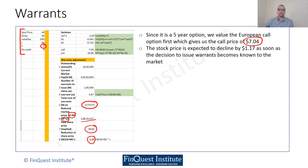That is the conclusion: the stock price is expected to decline by 1.17 dollars as soon as the decision to issue warrants becomes known to the market.